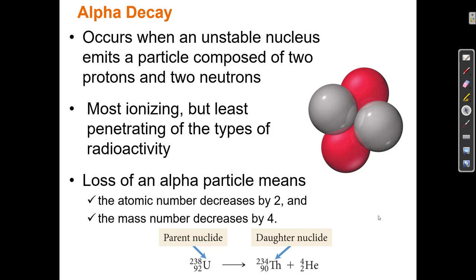In this video, I'm going to cover radioactive decay. Let's look more closely at alpha decay. An alpha particle is composed of two protons and two neutrons. If we look at the periodic table, we see that the element with two protons is helium, and the most stable isotope of helium also has two neutrons. So an alpha particle is just the nucleus of a helium atom without its two electrons.